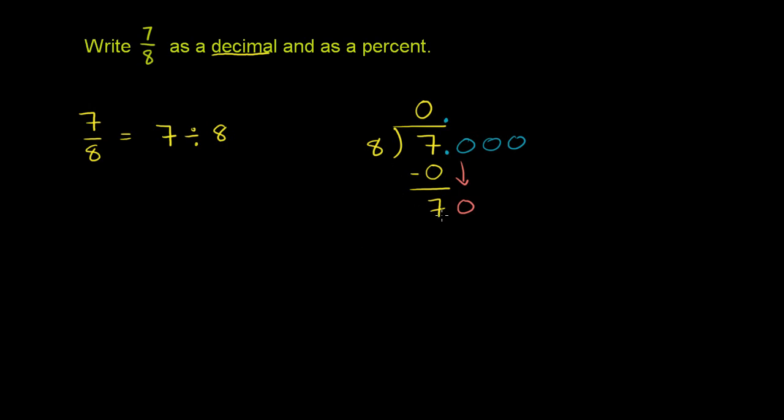And then you say, 8 goes into 70 how many times? Well, 8 times 8 is 64, so that works. 8 times 9 is 72. That's too big. So it goes into it 8 times. 8 times 8 is 64. When you subtract, 70 minus 64 is 6.